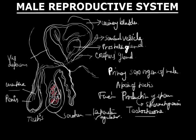There are two testes in the body of a male, surrounded by a skin pouch called the scrotum, suspended from the body below the abdominal cavity. The testes produce the male sex gamete, or sperm, by the process of spermatogenesis.